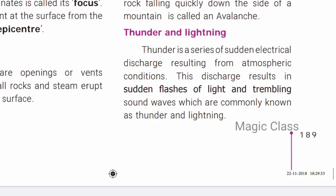Thunder and lightning — we all know what these are. Thunder is a series of sudden electrical discharges resulting from atmospheric conditions. What you see are sudden flashes of light. These involve both light waves and sound waves.